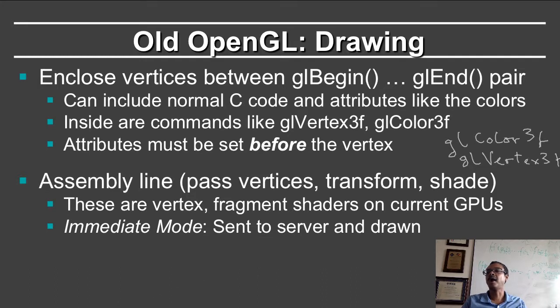In old style OpenGL, it was also important that the color would be set before the vertex. Therefore, you might have something like GLColor3f to set the color, and then GLVertex. This was also done in an assembly line model, so you pass vertices to the server, they get transformed, they get shaded within the OpenGL pipeline. Nowadays of course you have modern vertex and fragment shaders in the graphics processing unit. In old OpenGL, there was also a concept of immediate mode wherein you specify triangles, it was immediately sent to the server and drawn.